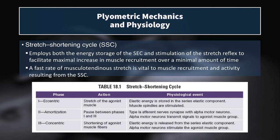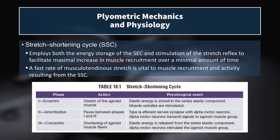Now let's break down the phases of the stretch shortening cycle. The SSC employs both the energy storage of the series elastic component and stimulation of the stretch reflex to facilitate a maximal increase in muscle recruitment over a minimal amount of time. That's really what plyometrics are — maximal muscle recruitment in minimal time. You need very short ground contacts for a movement to be considered plyometric. The goal is shorter ground contact time with higher force production. A fast rate of musculotendinous stretch is vital, so a slow controlled descent will not tap into the elastic storage or stretch reflex benefits — the eccentric phase has to be rapid.